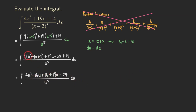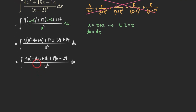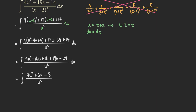Now combine like terms. We have 4u² as the only quadratic term. Then −16u+19u gives +3u. And 16−24 gives −8. So we have the integral of (4u² + 3u − 8) over u⁵, du.